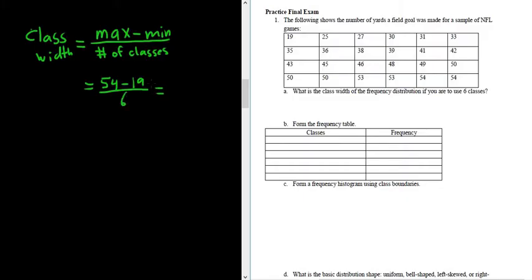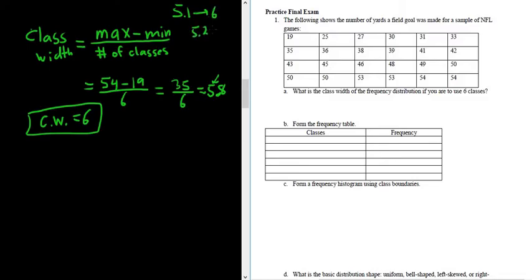I'm going to put this in my calculator. So 54 minus 19 is 35, and divide it by six, and I get 5.8. So the class width, there's a special rounding rule. For the class width, you're always supposed to round up to the same number of decimal places as the data. So in this case, we have whole numbers, so we take this number and we round it up to six. So if it was 5.1, we would still go to six. It's a rule where you always round up.